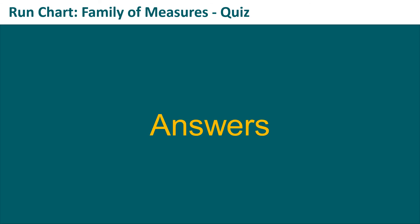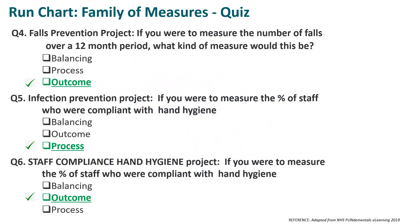The answers: Question four — if you were to measure the number of falls over a 12-month period, this is an outcome measure. Question five — in an infection prevention project, measuring the percentage of staff compliant with hand hygiene would be a process measure. And in a staff compliance hand hygiene project, measuring the percentage of staff compliant with hand hygiene in that particular project would be an outcome measure.